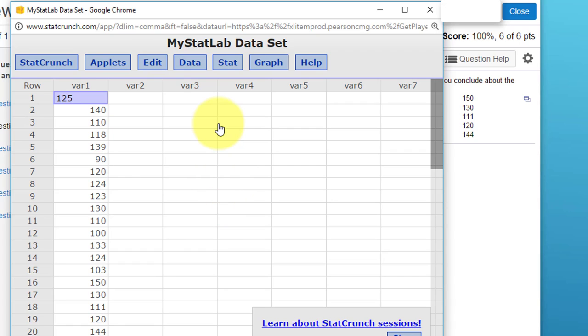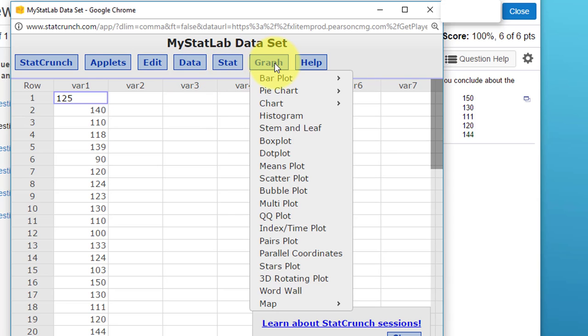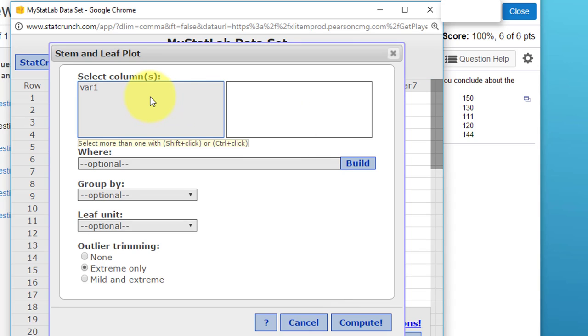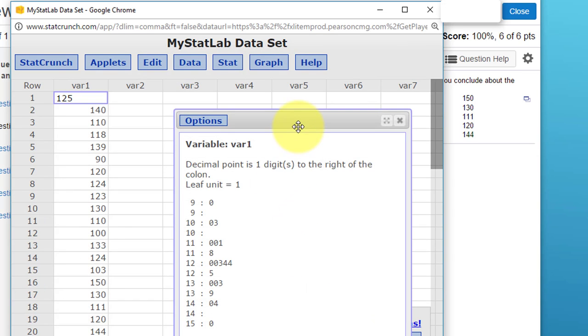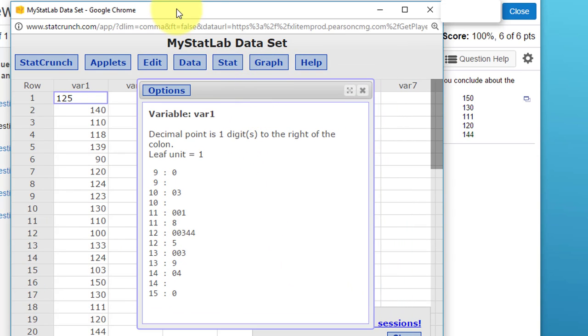More than likely, the procedure you're going to need is under the data tab, the stat tab, or in this case the graph tab. We want a stem and leaf. We get this dialog, select our data from that column, move it over to the right side. I'm going to leave everything else default and click on compute. And we get a stem and leaf.